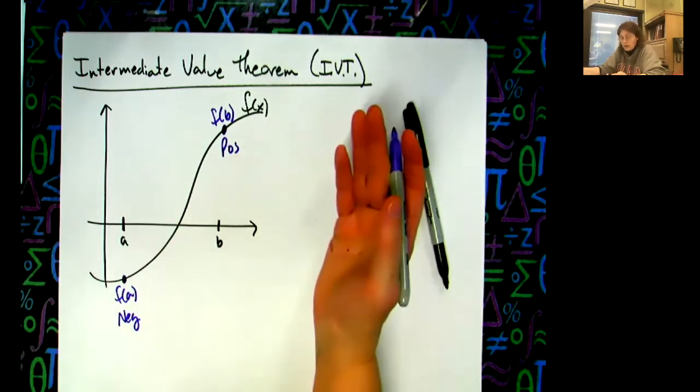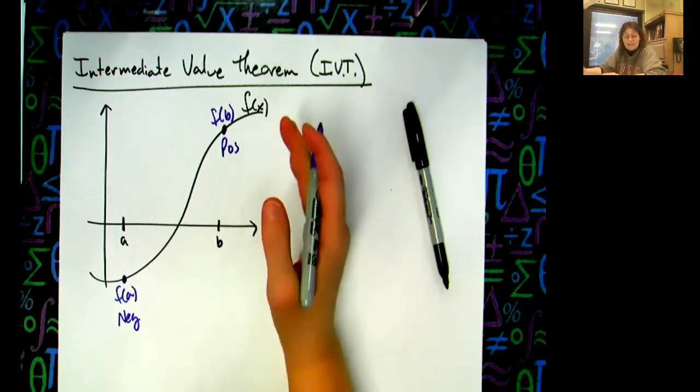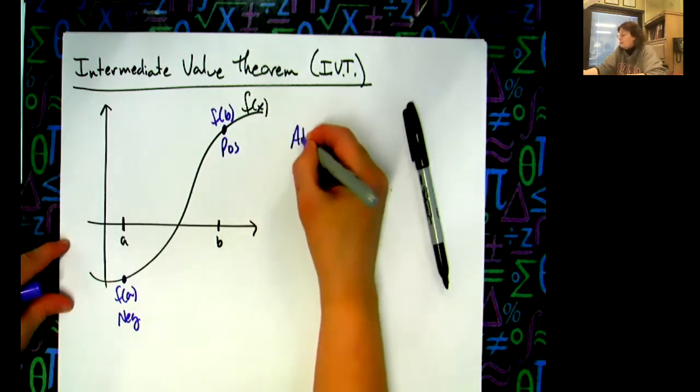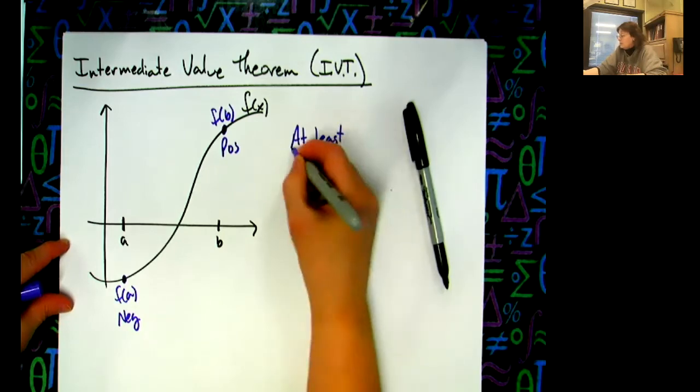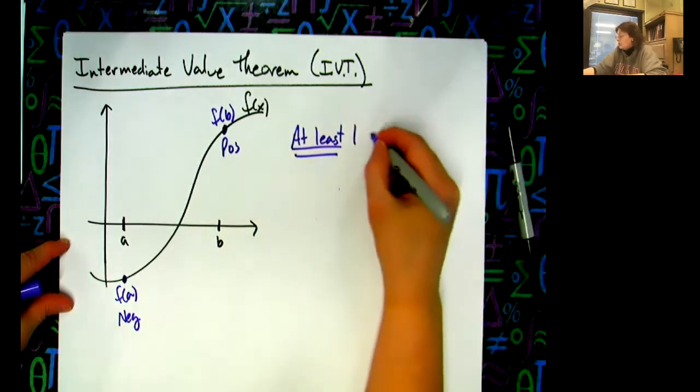So basically it says if I've got some interval and I plug the numbers into the function and one of them is positive and one of them is negative, I know that at least one real root exists.